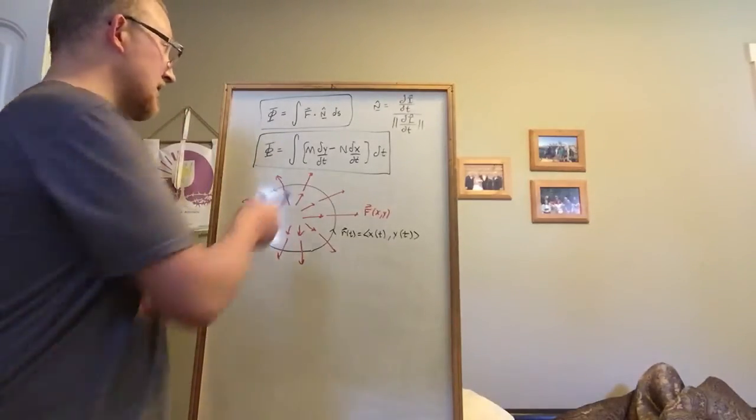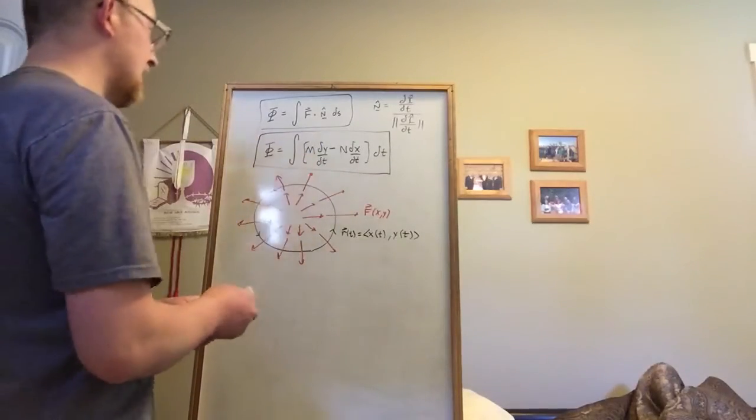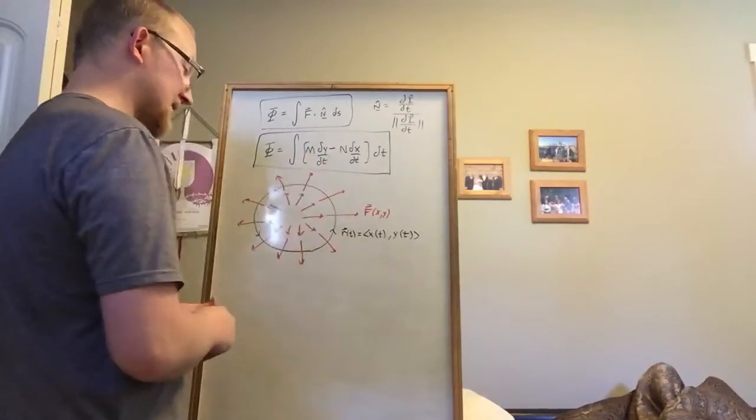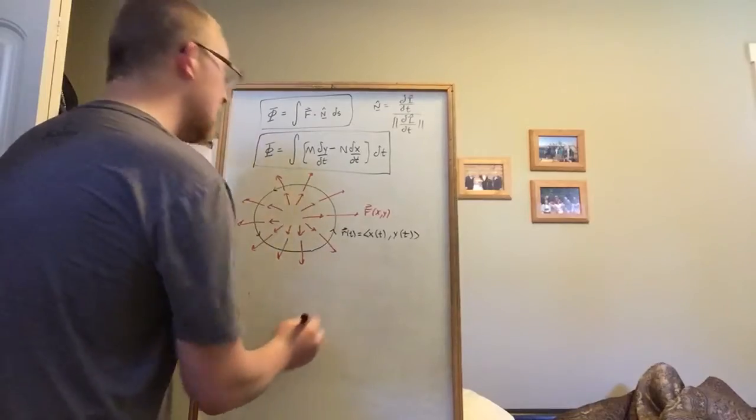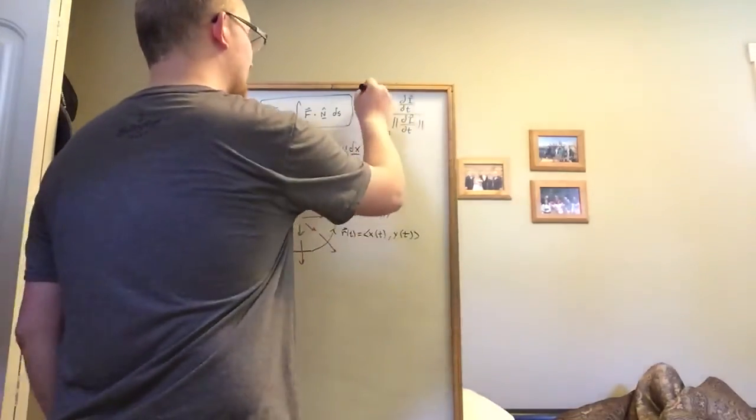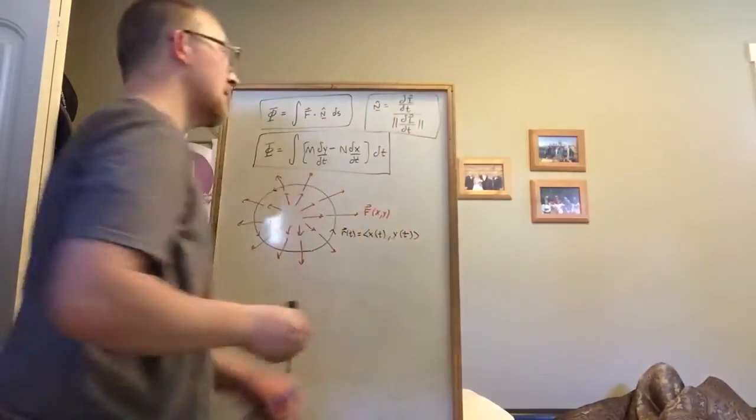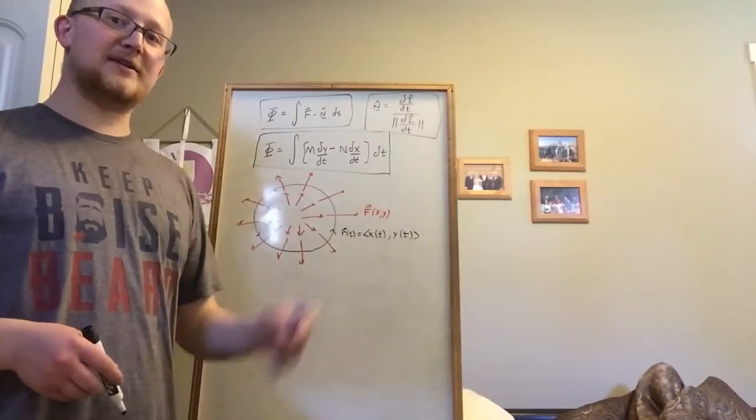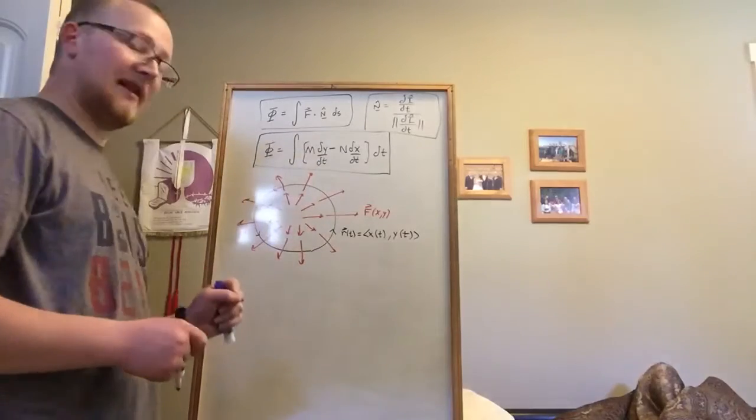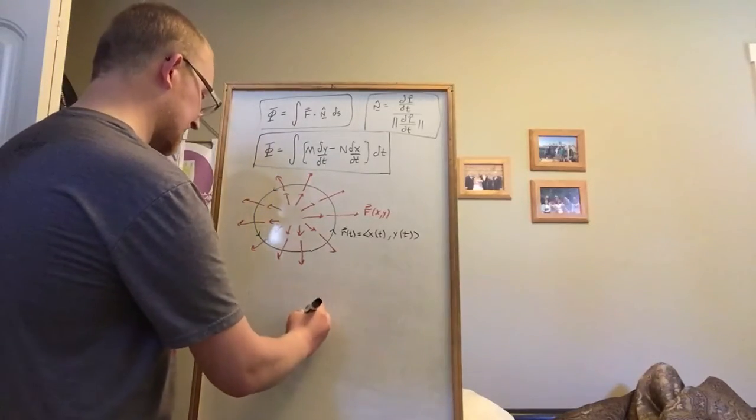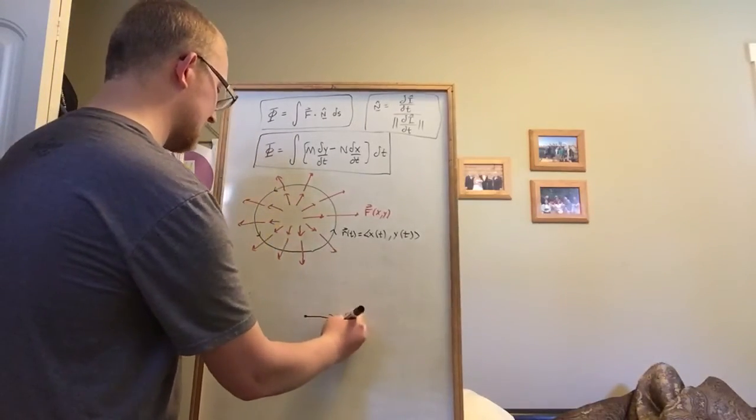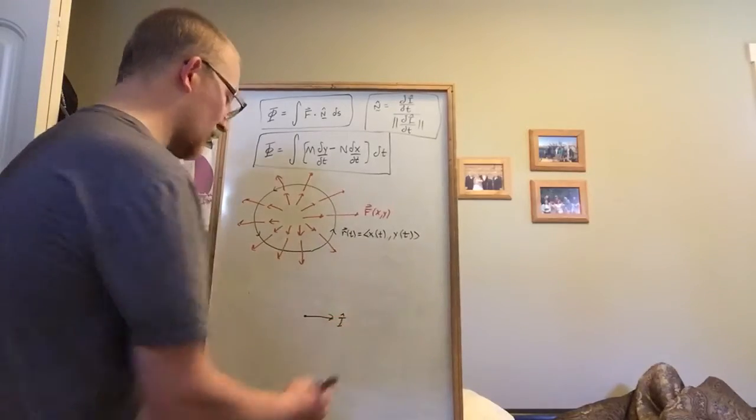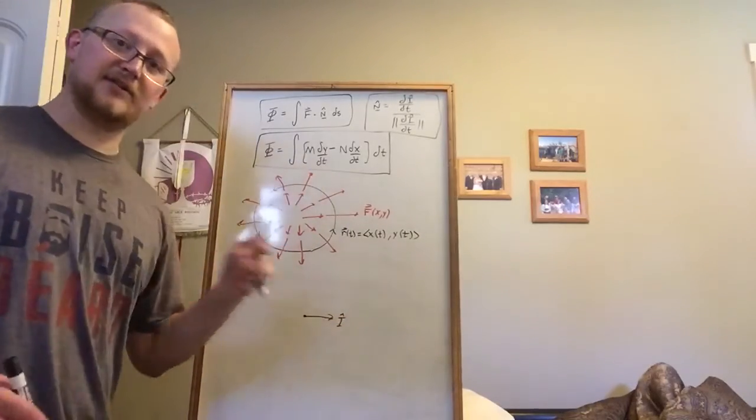Now, if you remember, one of the assumptions in this derivation was we decided instead of finding the unit normal vector using this equation, the change in the unit tangent with respect to time divided by the magnitude of itself, we decided there's a clever way to do this because we know that the unit tangent vector, like let's say it's here,